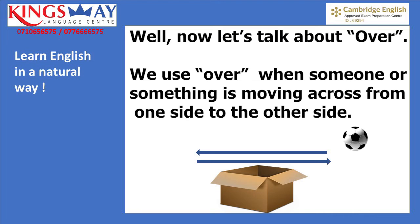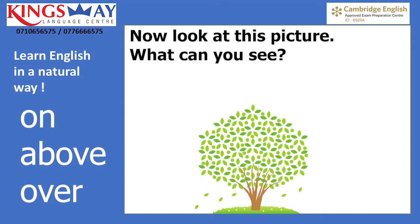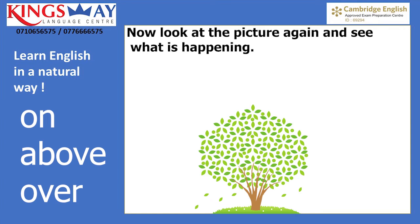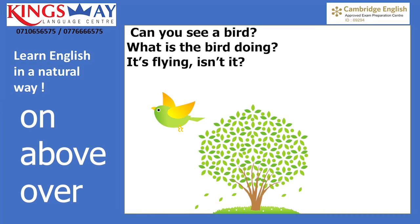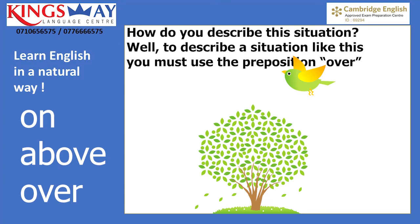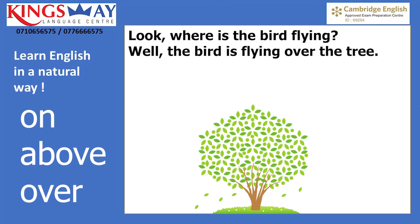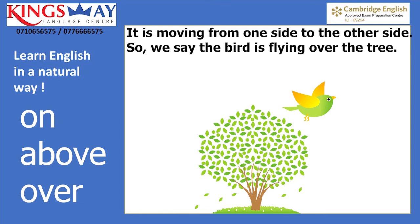Now let's talk about 'over.' Look at this picture. What can you see? You can see a tree. Now look at the picture again and see what is happening. Can you see a bird? What is the bird doing? It's flying, isn't it? To describe a situation like this you must use the preposition 'over.' Where is the bird flying? The bird is flying over the tree — it is moving from one side to the other side.